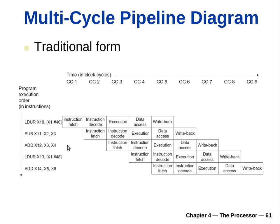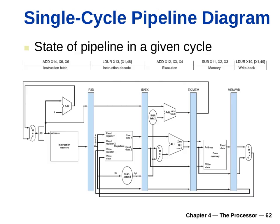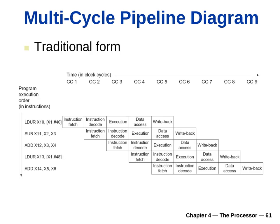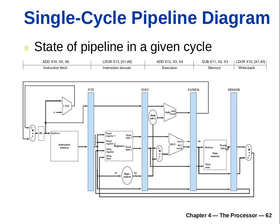We can look at the pipeline design in two ways — the traditional multi-cycle form, or the single-cycle form where you show the entire data path and what instructions are executing at the different stages. This is the implementation of the pipeline with five stages: Instruction Fetch, Instruction Decode, Execute, Memory, and Write-back.